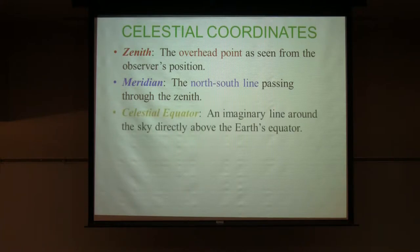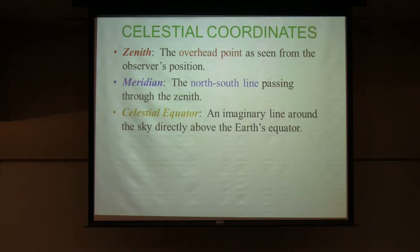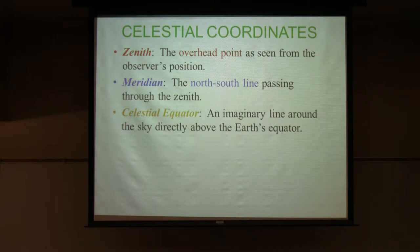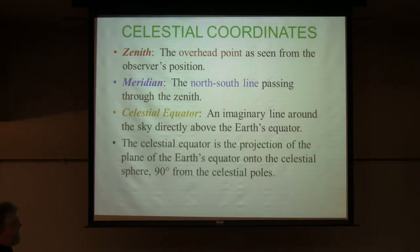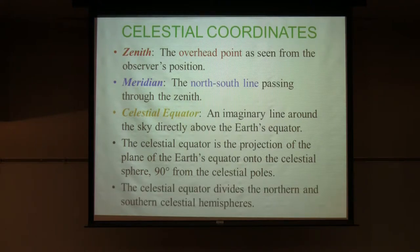The meridian is the north-south line passing through the overhead point. The celestial equator is an imaginary line around the sky directly above the earth's equator. If you extended the plane of the earth's equator all the way out to where it intersected the dome of the sky, that dotted line would be the celestial equator. It goes from the eastern horizon — not directly overhead here — and sets in the western horizon due west. It divides the sky into the northern and southern celestial hemispheres.